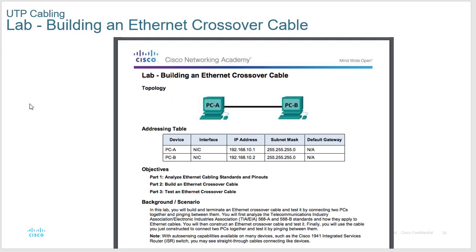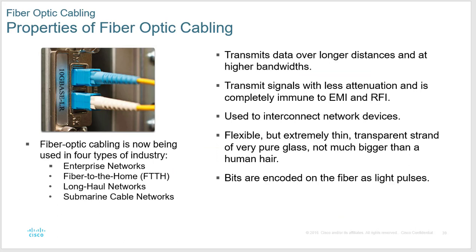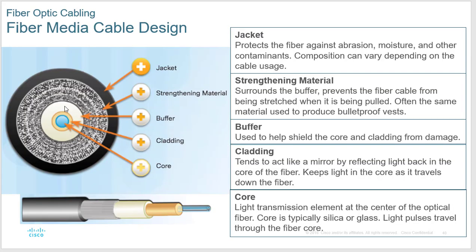Fiber cabling is really nice. In many areas, fiber now runs all the way to the house. Fiber is completely immune to electromagnetic and radio frequency interference, and it can go much longer distances — some fiber cables go miles before losing signal strength. Inside a fiber cable you have a small glass core, cladding around it that acts like a mirror to keep light pulses inside, then a buffer, strengthening material, and an outer jacket.